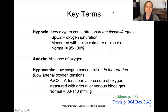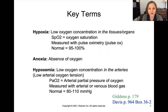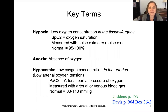Here are some key terms you need to know about gas exchange. Hypoxia means low oxygen in the tissues or organs. SpO2 is how we measure oxygen saturation — it's one of our main vital signs, measured with pulse oximetry. The normal range for SpO2 is 95 to 100%, meaning 95 to 100% of the red blood cells capable of carrying oxygen are actually carrying oxygen.